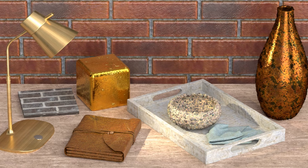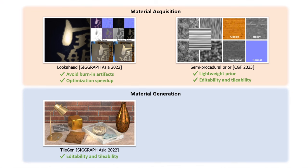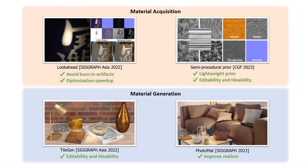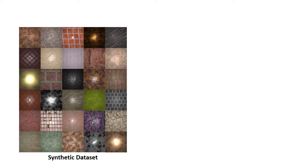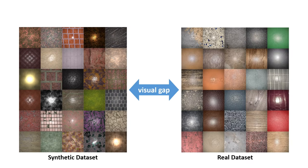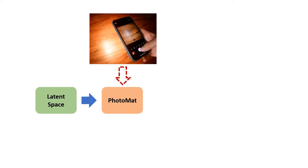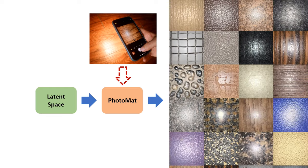Lastly, to improve the realism of sampled results, we propose Photomat. All the existing material generators are trained on synthetic dataset, which has visual-gap with real-world materials. To tackle this issue, we developed a novel method to train Photomat exclusively on real flash photos. And by sampling latent space, Photomat can generate photorealistic materials.